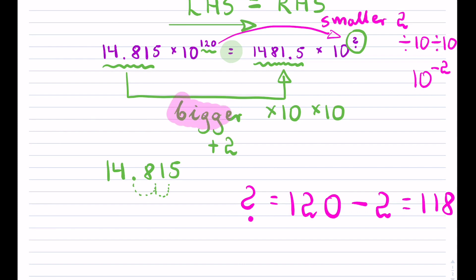Again, this got bigger by 2 in magnitude and therefore the other one must get smaller by 2.